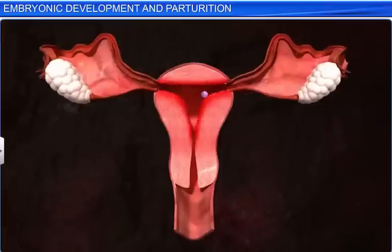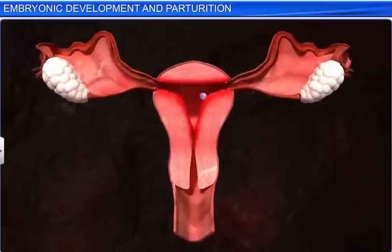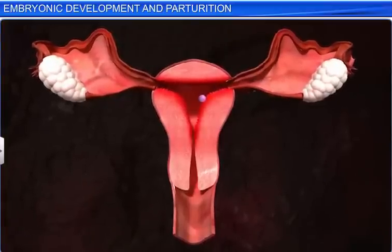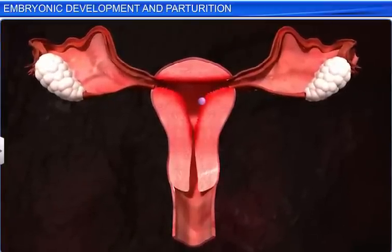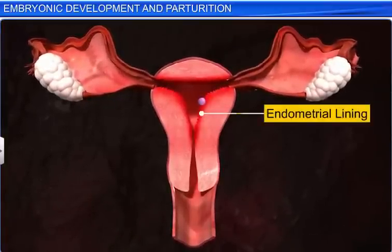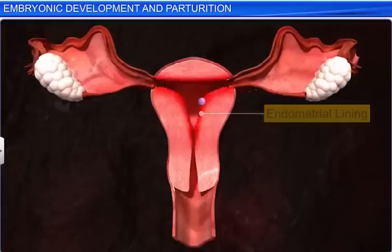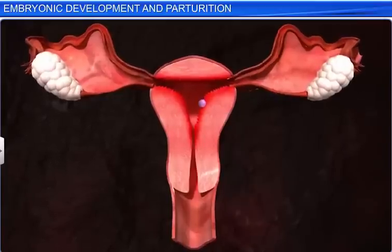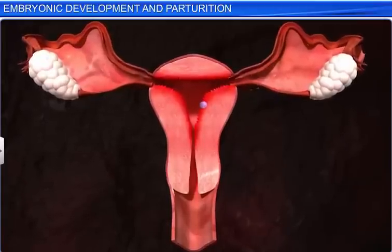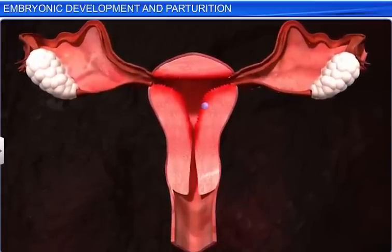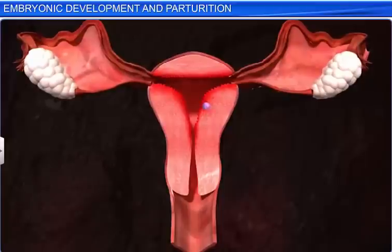As the trophoblast grows outwards and penetrates the endometrial lining of the uterus, the blastocyst with a developing embryo gets implanted in the uterus, and pregnancy is initiated.